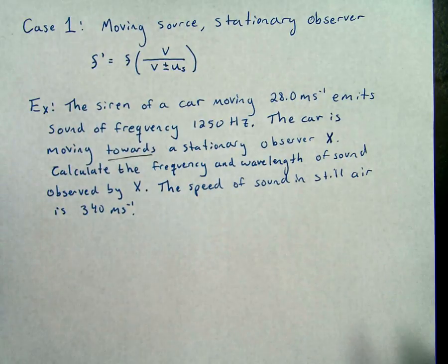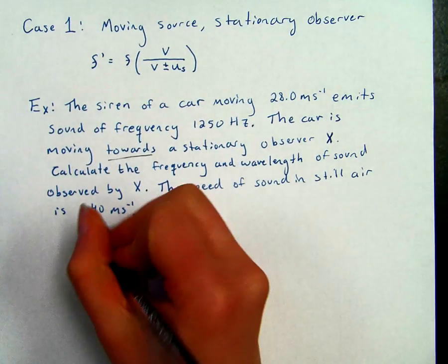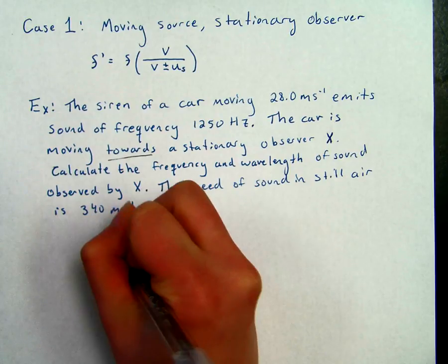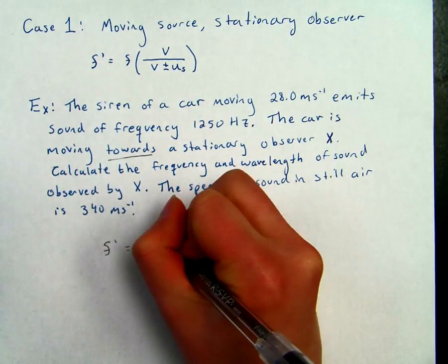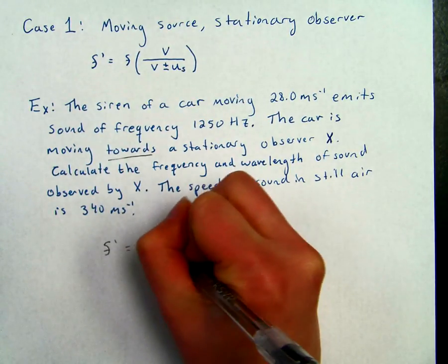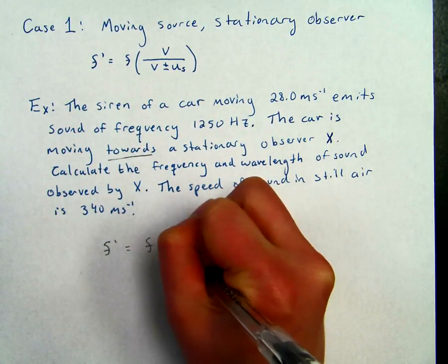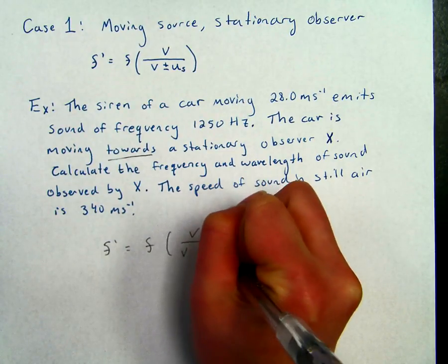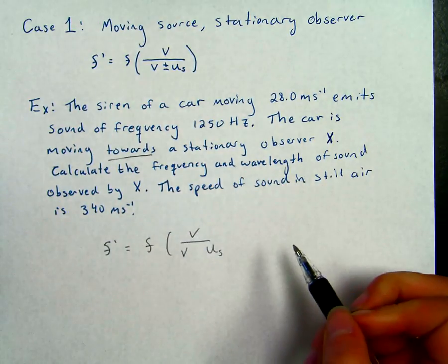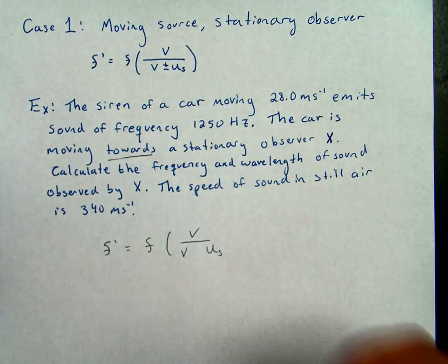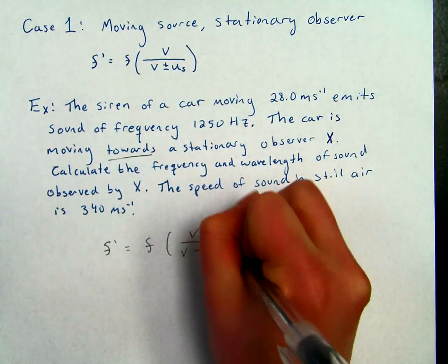So let's set up our formula here. We know that we're going to do F prime equals the frequency times the speed over speed minus US. The question is, do we use the positive or the negative? Well, since it's moving towards us, we're going to use the negative sign here.